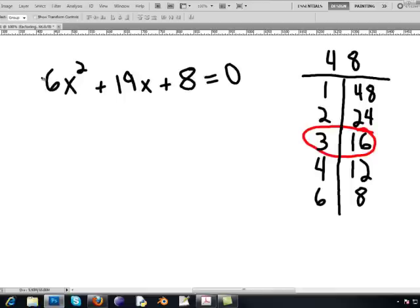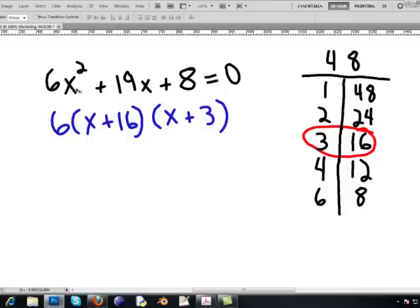And then what you're going to want to do is drop down this 6 by itself and then factor normally with the rest. So you write your x and your x for the x squared.